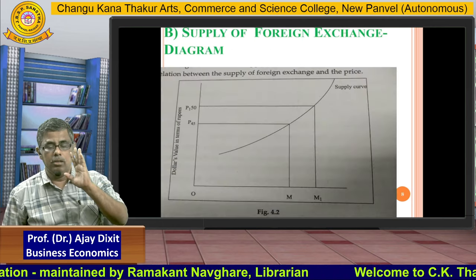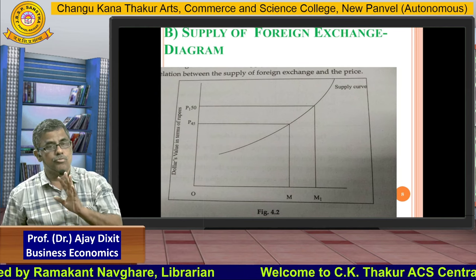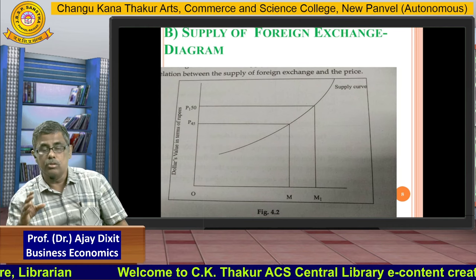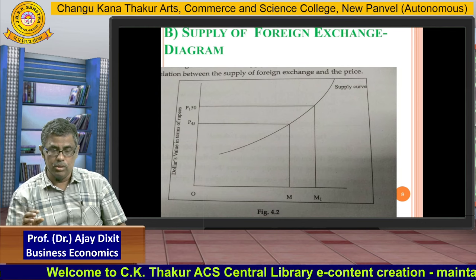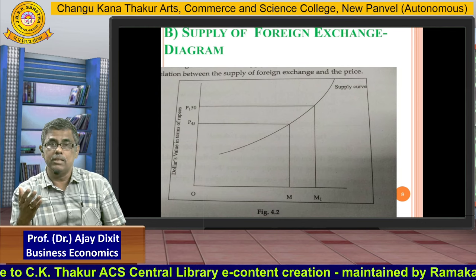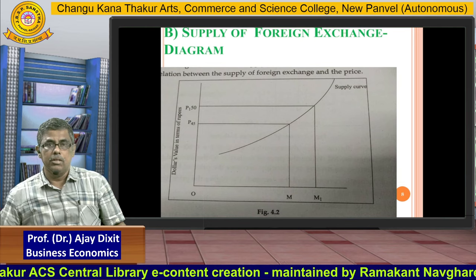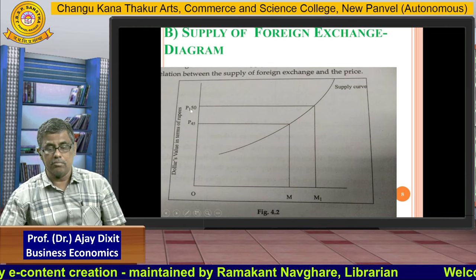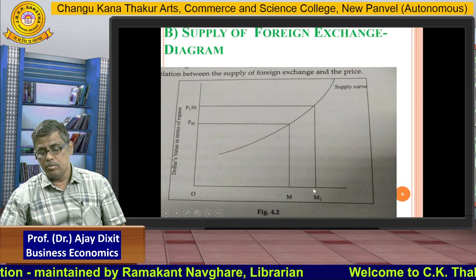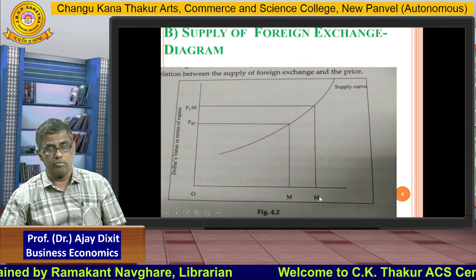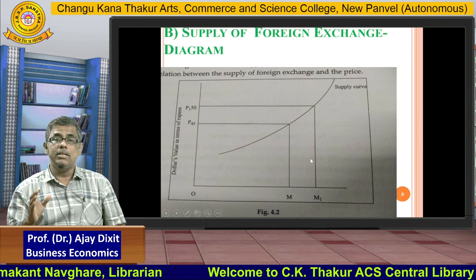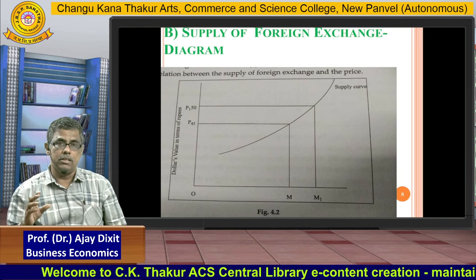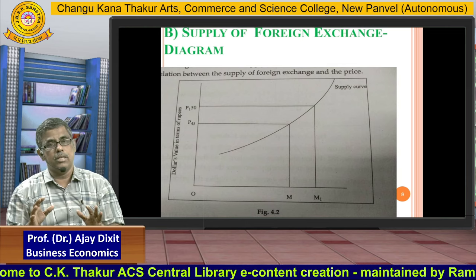Just as there is a demand curve, there is also a supply curve for foreign exchange. Here, if the value of the dollar in terms of rupees increases, its supply increases; if its price reduces, its supply reduces. We can see that from P to P1, if the price of the dollar increases, its supply into the market increases from M to M1. So it is an upward-sloping, positively-sloped supply curve for foreign exchange.